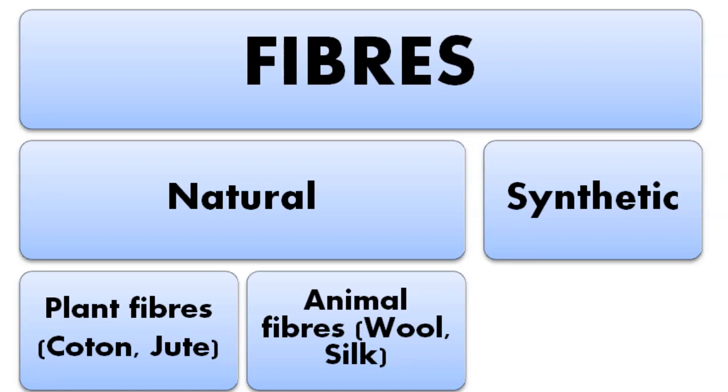Fibers are of two types. One is natural fiber, another is synthetic fiber. Natural fibers again divided into two types. One is plant fibers, example cotton and jute.